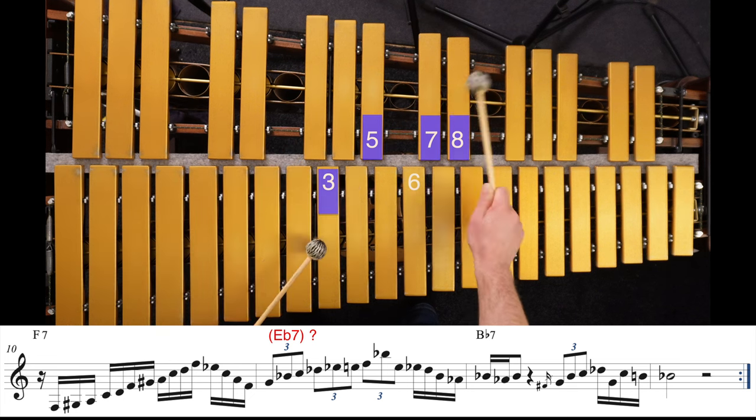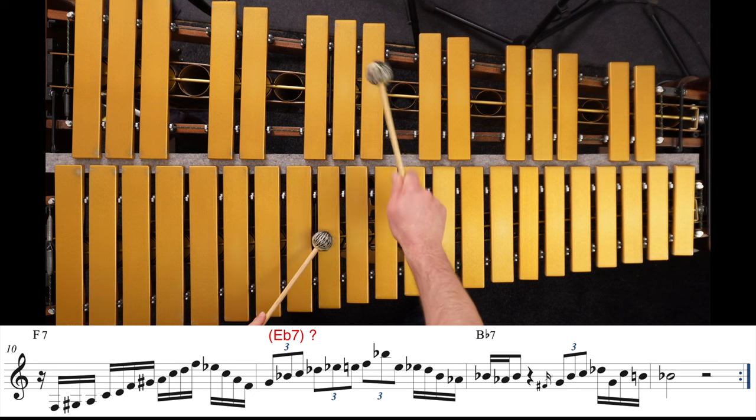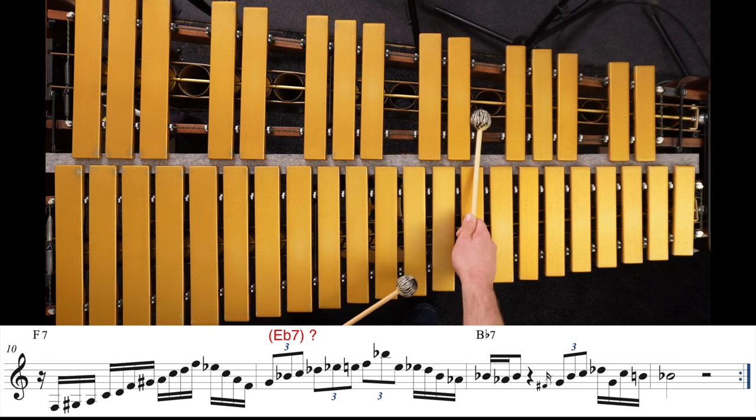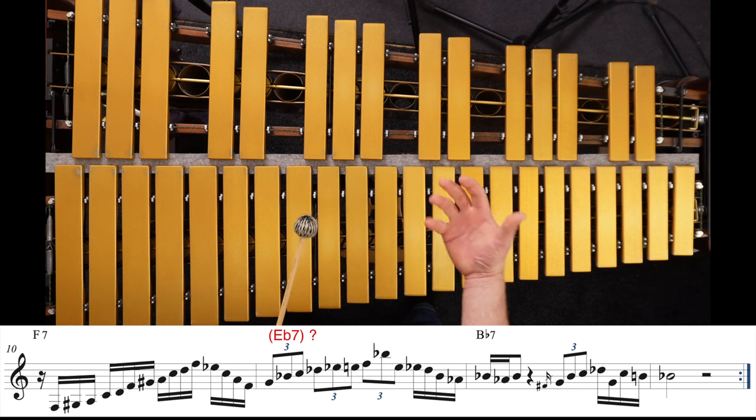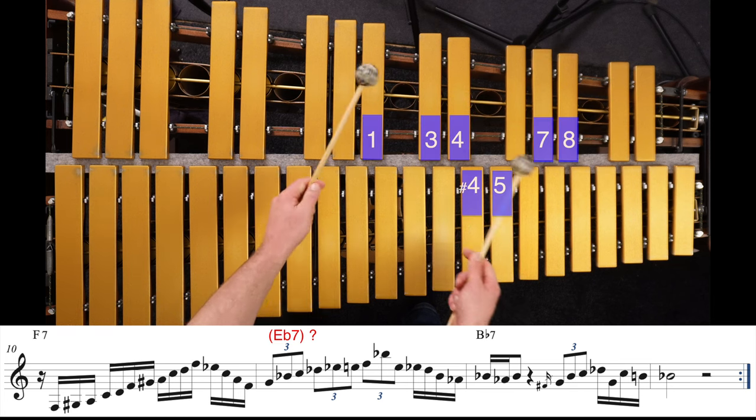And if you see, that Eb7 in first inversion is in there, but the F7 chord is still ringing. So the way that functions, this is the nine, this is the eleven, five, the flat 13, and the seven. But it also has one of those double meanings because this part of it also connects directly into the Bb blues scale.